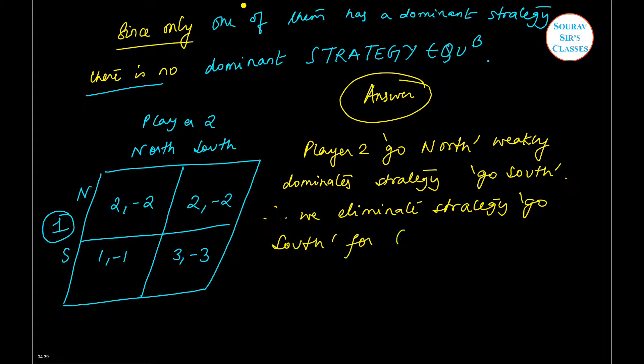Okay. Now if this is given, now so we can consider that if this particular column gets eliminated, then these are the payoffs that will be available to player 1. And if we look at these two payoffs, then 2 is greater than 1.